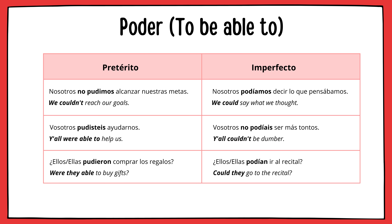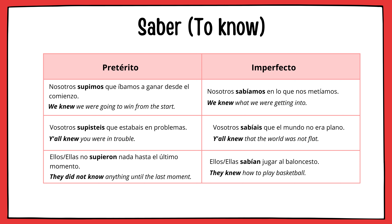Nosotros no pudimos alcanzar nuestras metas. Ellos pudieron comprar los regalos. Nosotros podíamos decir lo que pensábamos. Vosotros no podíais ser más tontos. Ellos podían ir al recital. Next verb is saber, meaning 'to know.' Yo supe que era alérgico a los 10 años. Cuando supiste que quería ser artista. Él lo supo nada más verme. Yo sabía todos los verbos irregulares de memoria. Tú sabías que era importante para mí. Él sabía que debía conducir por la izquierda. Nosotros supimos que íbamos a ganar desde el comienzo. Ellos no supieron nada hasta el último momento. Nosotros sabíamos en lo que nos metíamos. Vosotros sabíais que el mundo no era plano. Ellos sabían jugar al baloncesto.